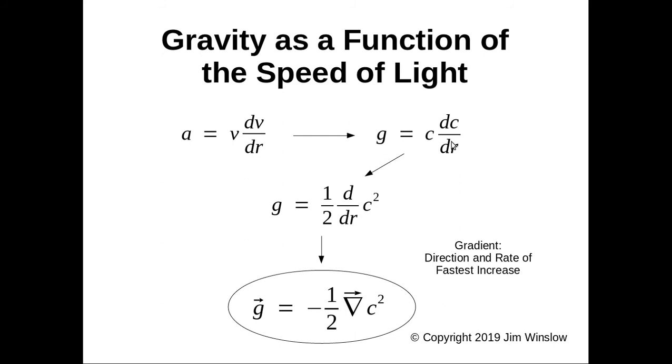It gets a little better. So let's do a little bit of algebra here. Here's an algebraic trick where we take the speed of light squared, we take the derivative of it with respect to r times one half. We get the same equation but there's no direction with this equation. So here's the final equation right here.